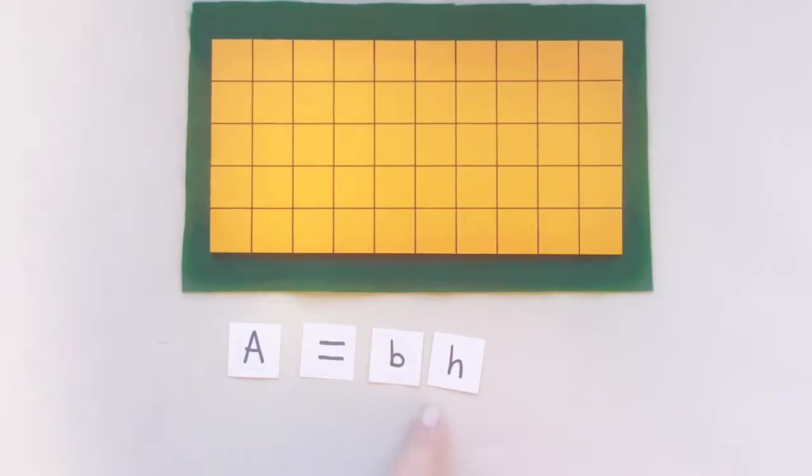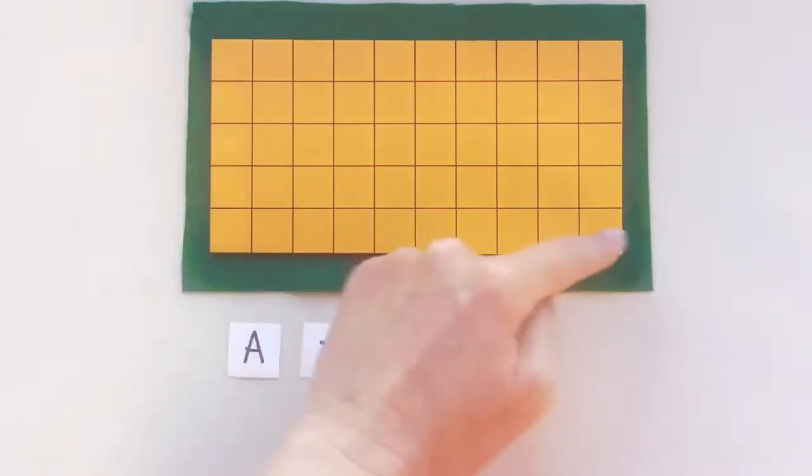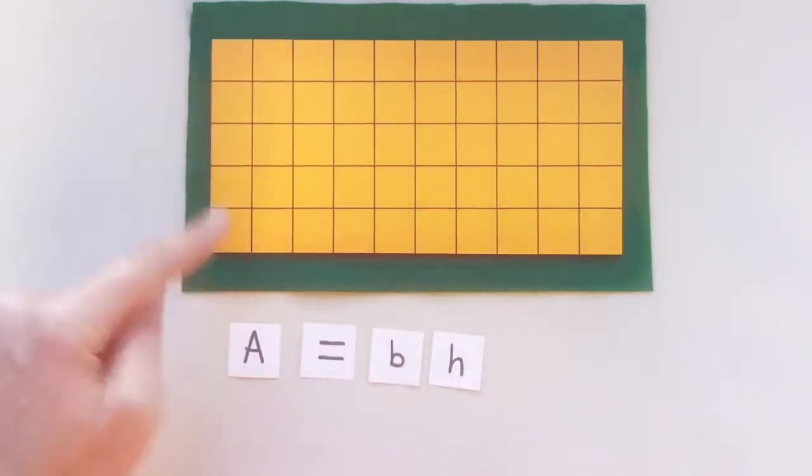And this is our result: area equals base times height. The area of this rectangle is found by multiplying its base times its height, and that's the formula for finding area of a rectangle.